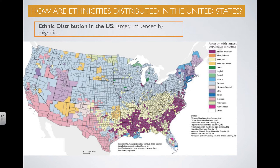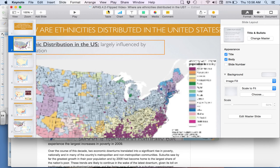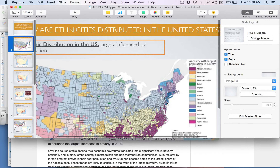Migration patterns help us understand, for example, why African Americans are largely distributed in the Southeast, why Hispanics are distributed in the southwestern part of the United States. Tracing back to early migration patterns of white European settlers coming to the 13 colonies helps us understand some of the ethnic patterns that exist in the northeastern region of the United States.